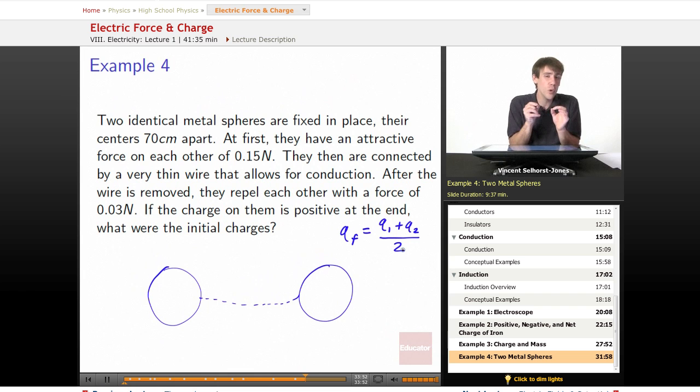There would be a few elementary charges strung along that wire, but we're going to assume it's so thin, so small, very few are going to wind up being left there. They're almost entirely going to be on the spheres. Finally, the spheres repel each other with a force of 0.03 newtons. If the charge on them is positive at the end, what were the initial charges? So at the end, we've got positive charge, so that means that we know Qf is positive.